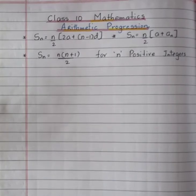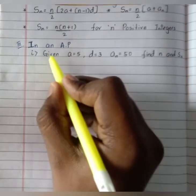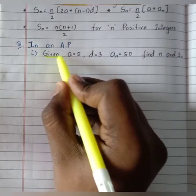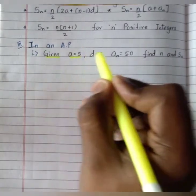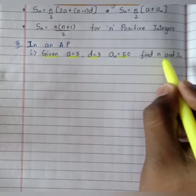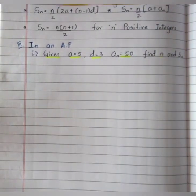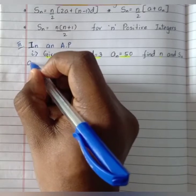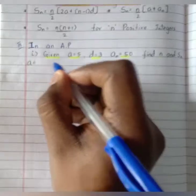In an AP, given a equals 5, d equals 3, an equals 50, we should find out the value of n and Sn.